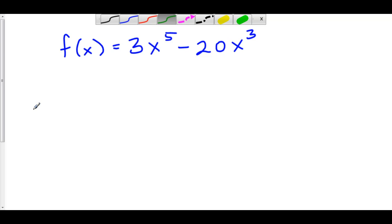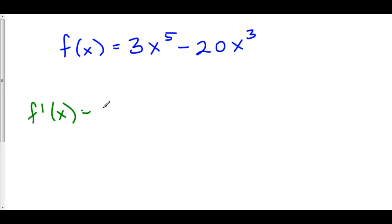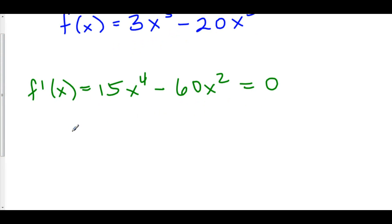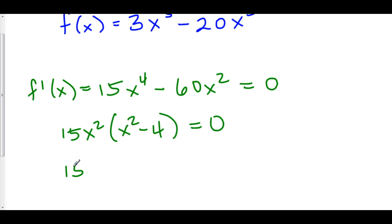First let's take the derivative of f. f prime of x is equal to 15x to the fourth minus 60x squared. Now let's find the critical points of f. The critical points are where f prime is equal to zero or undefined. Well, this is always going to exist because it's a polynomial, so let's set it equal to zero. We can first factor out 15x squared and we're left with x squared minus four, which equals zero. We can further factor this as 15x squared times x minus two times x plus two.